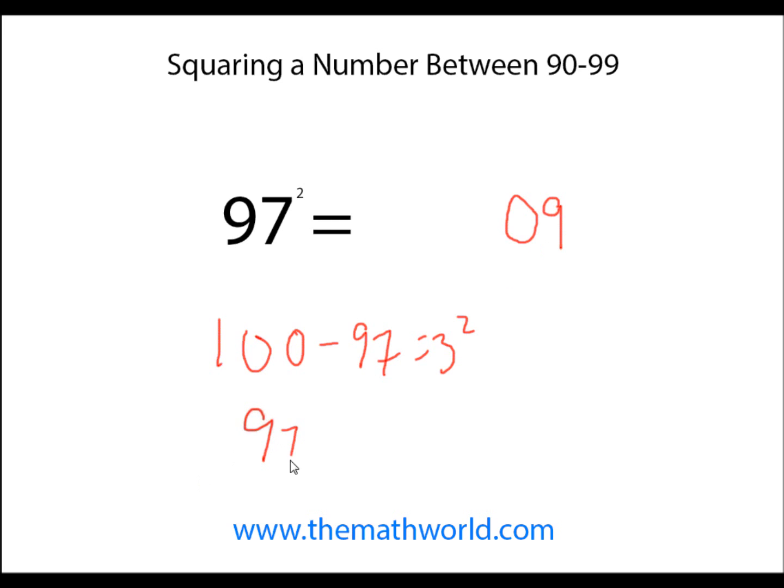Then we're going to take 97 minus the 3, and 97 minus 3 is 94, so our answer is 9,409.